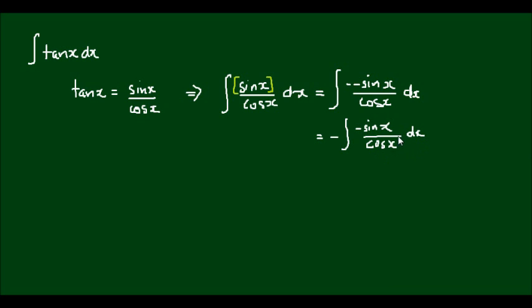What I have now is the derivative of the bottom function, the denominator function, on the top. And that means I can just do a simple u substitution here, because this negative sin(x) term is going to cancel out once I transform the independent variable x into another variable u. So let's do that.